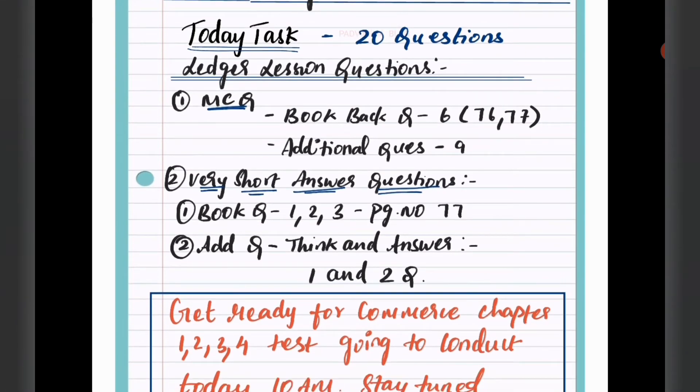MCQ questions, book question 6, page number 76 and 77. And now additional questions - prepare that, link in description box. Additional questions, 9 questions. Next, very short answer, book back questions, book back answers on website, link in description box, page number 77.